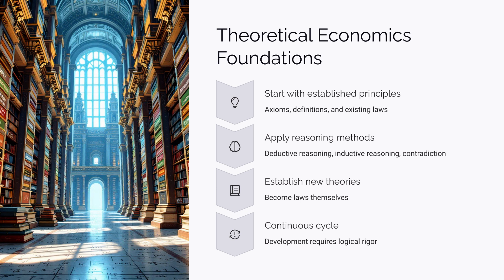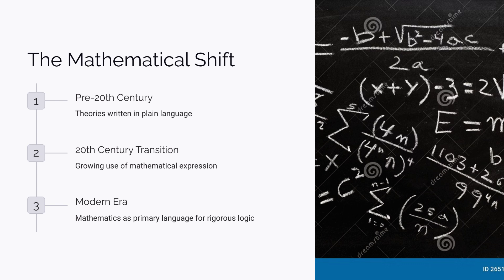First, let's look at each one. In the past, economic theories were written in plain language. This is why many people think of economics as similar to philosophy or the humanities — something built on words. However, since the 20th century, economics has shifted toward using mathematics rather than words or text to maintain logical rigour.